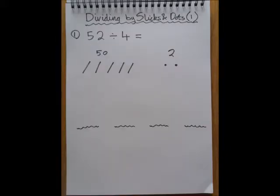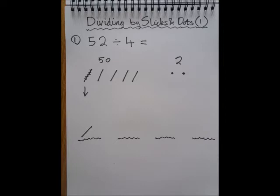Because we're dividing by 4 we put 4 squiggly lines at the bottom and then we start to share out the sticks.